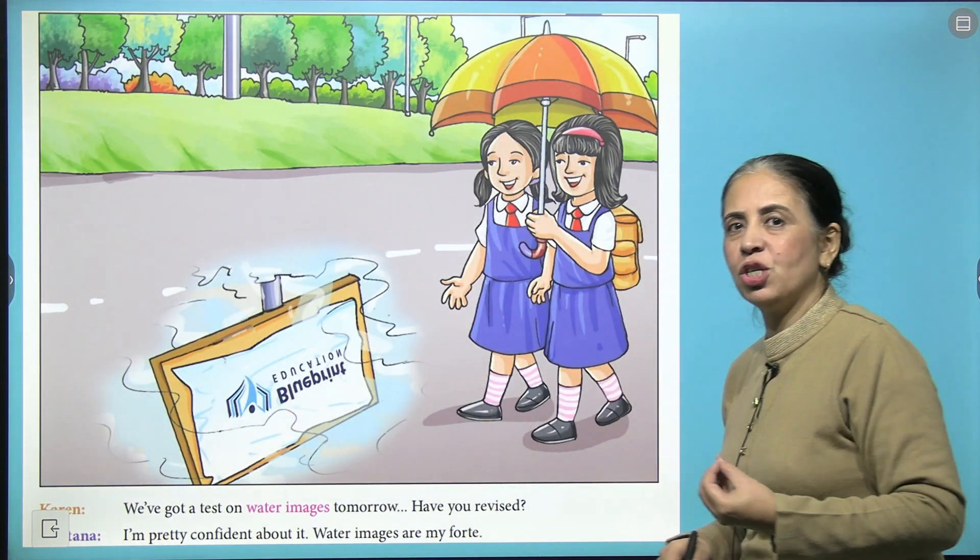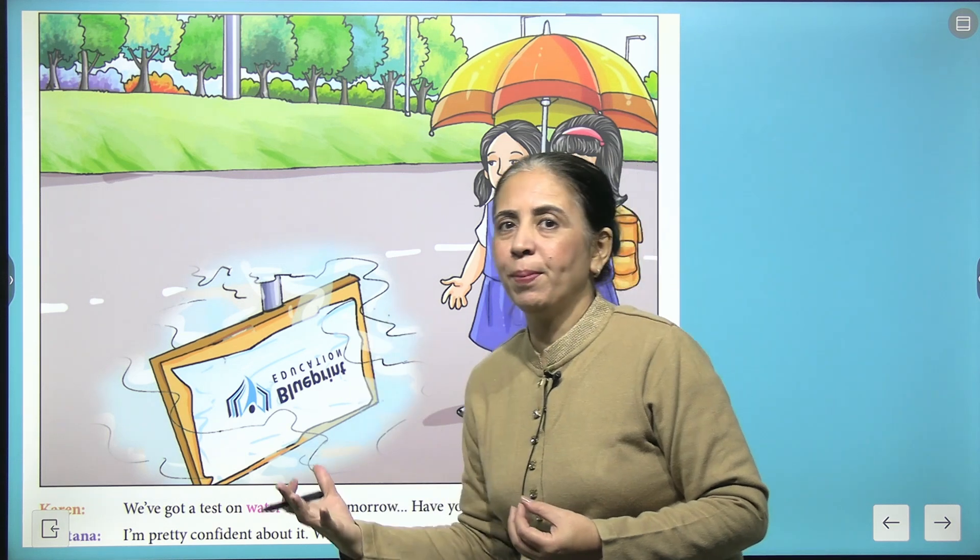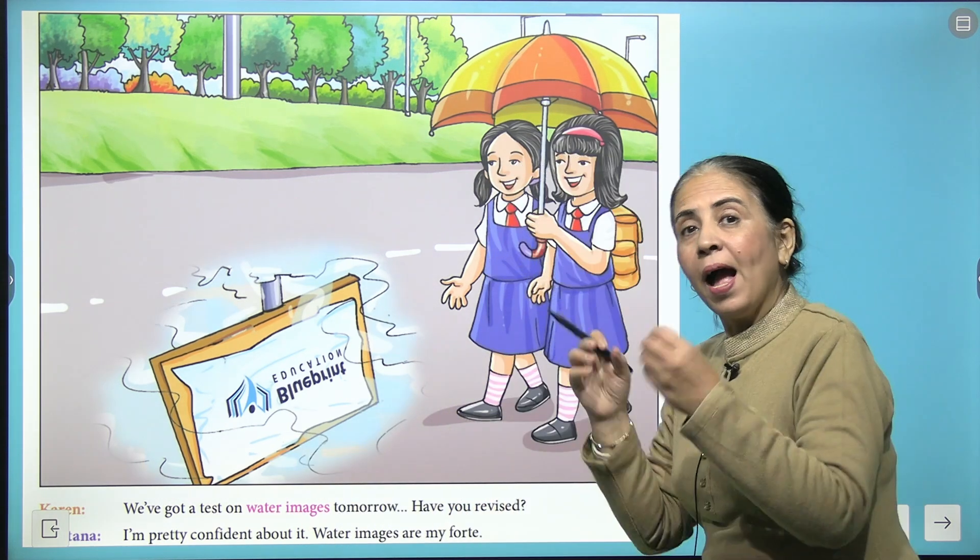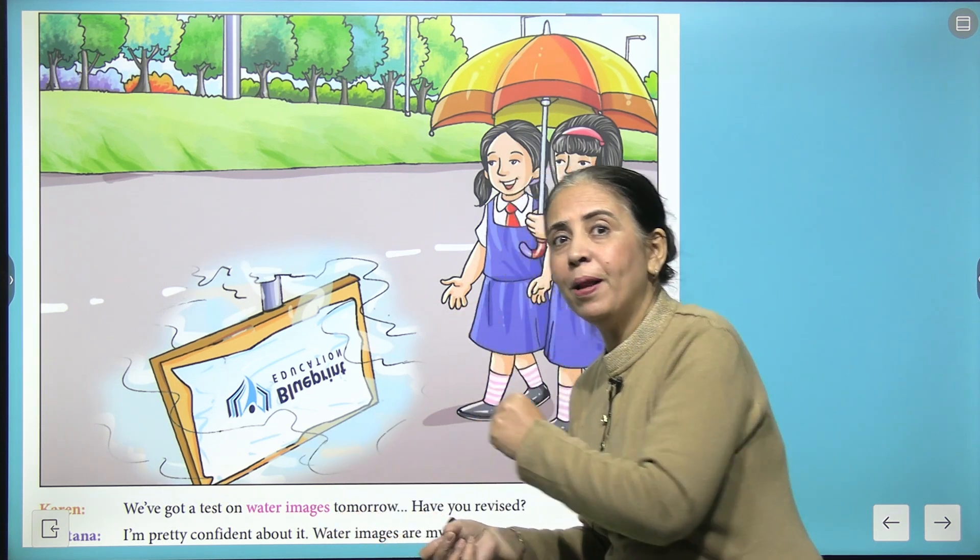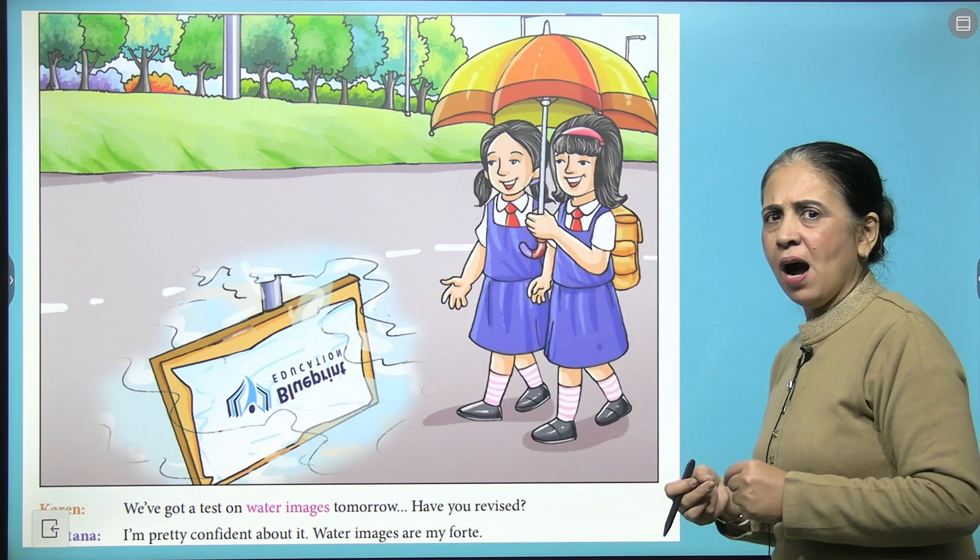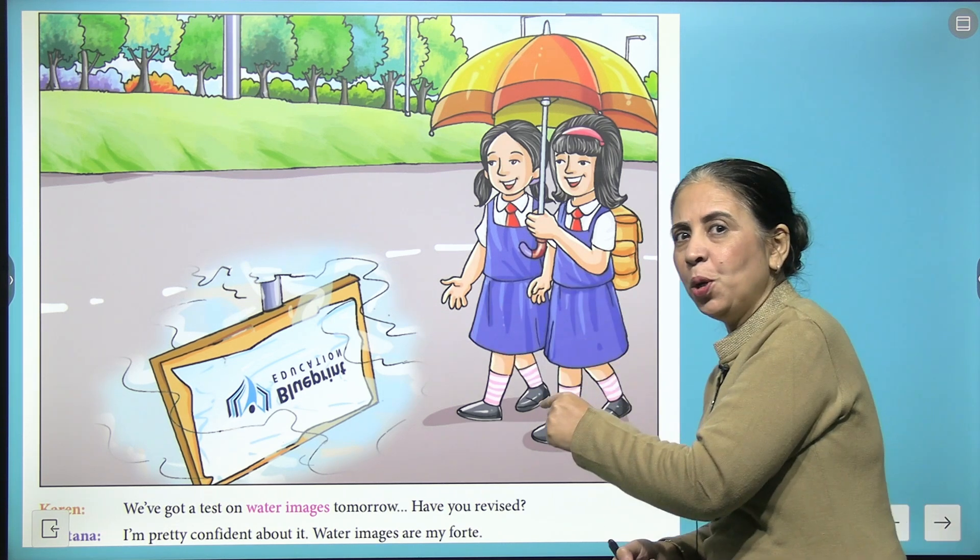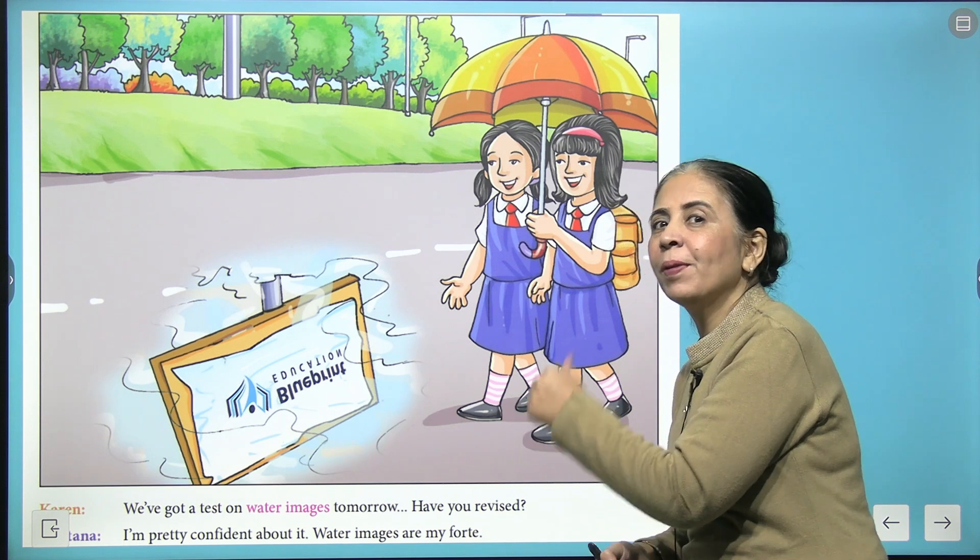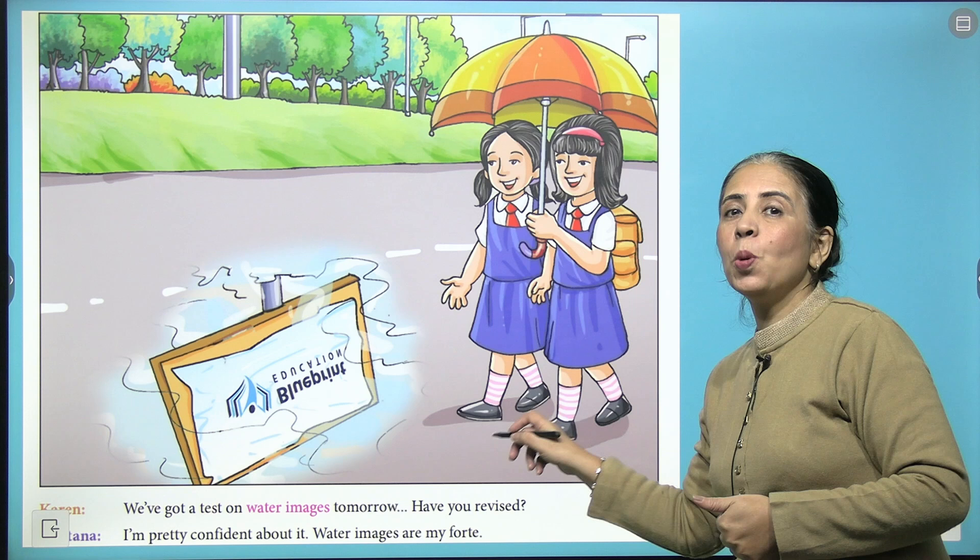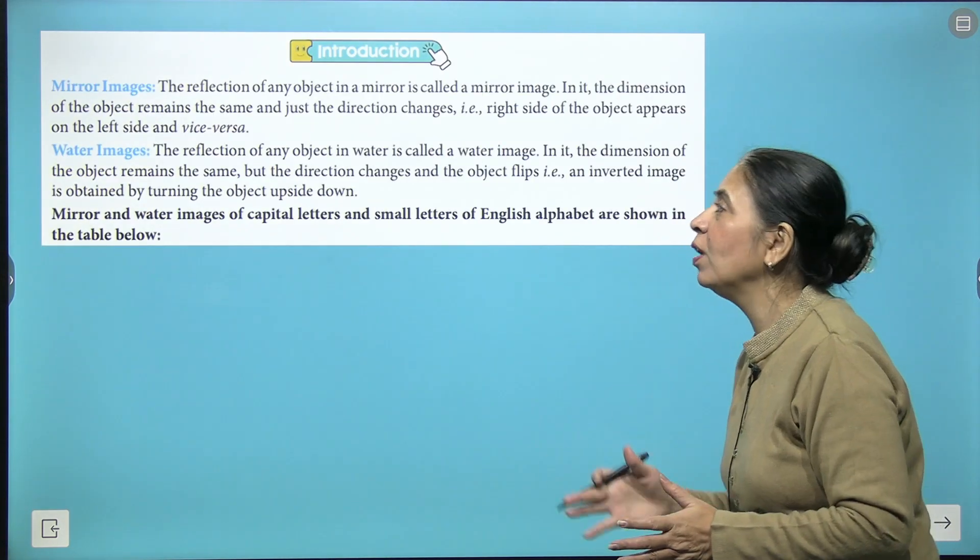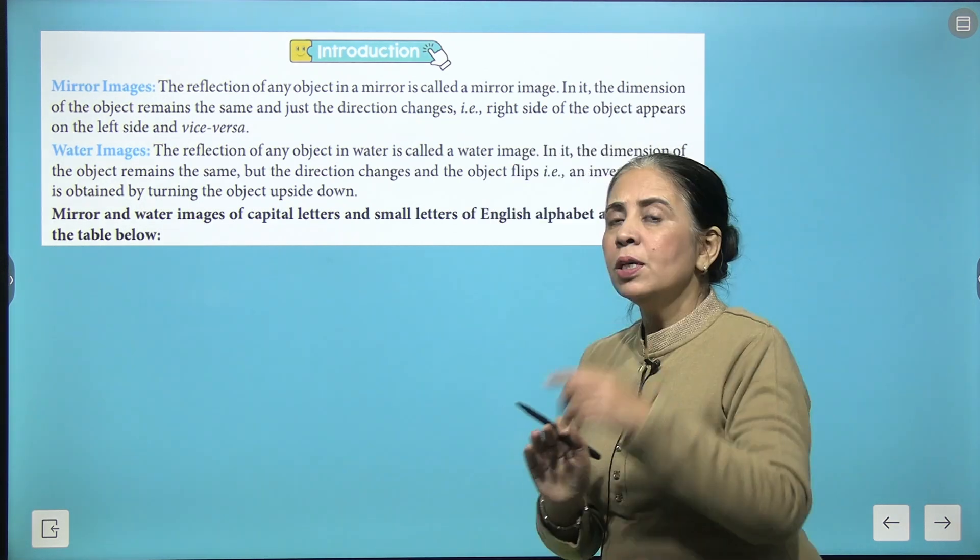So here we have Karen and Chetna, and they are talking about the water image and mirror image that is taught in the class. Promptly they found the water image in the portal of a billboard, and then she asked, are you confident? Then tell me what's written here. Can you check what is here? Perfect, that is Blueprint Education.